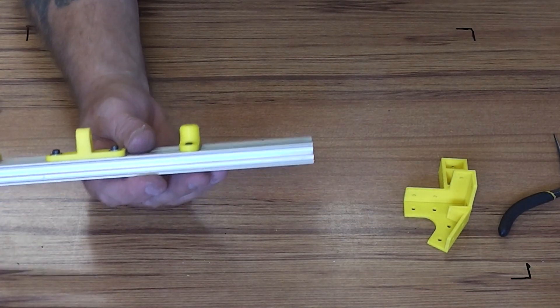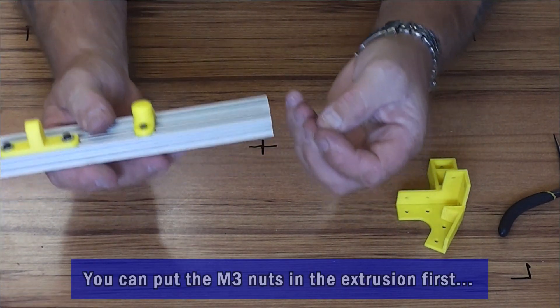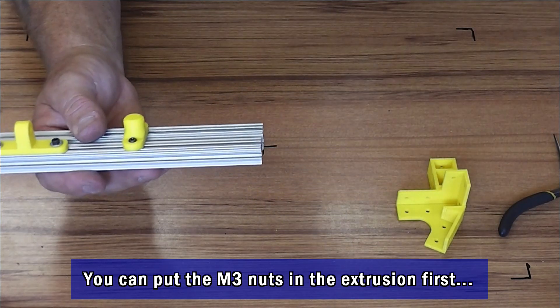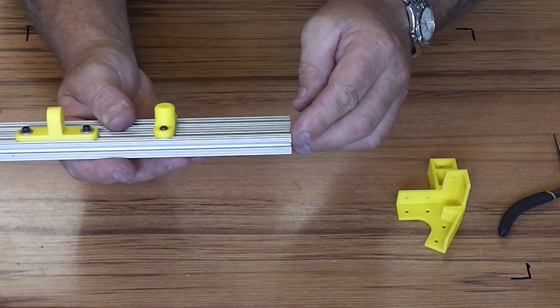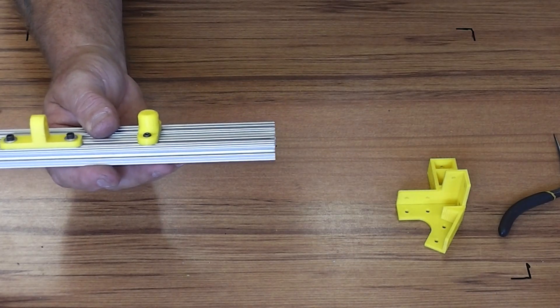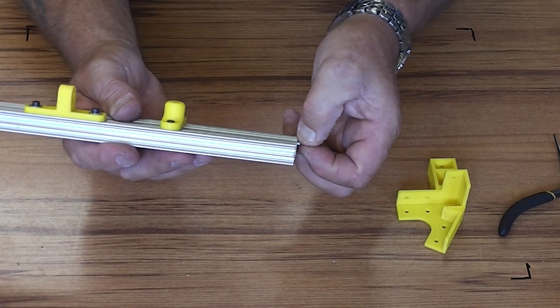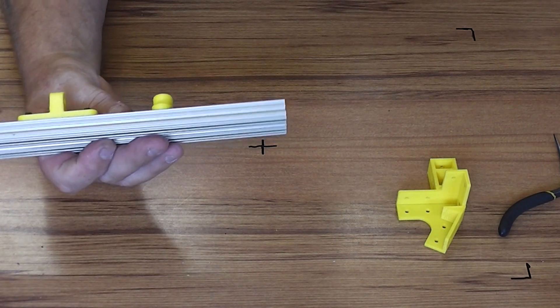Okay, so the other method of assembling anything with open beam is to pre-load the nuts. So that's just a simple matter of taking a nut and sliding it into the slot, and making sure you've got enough nuts in there for what you want to do. So I need one on the bottom one, two on the top ones, and one more on the bottom one on the other side.